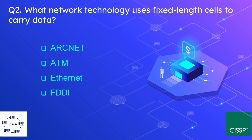Question number two: what network technology uses fixed-length cells to carry data? The options are Arcnet, ATM, Ethernet, and FDDI. The correct answer is ATM. ATM is the networking technology that uses a fixed 53-byte cell.